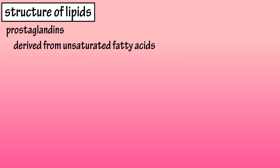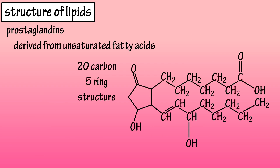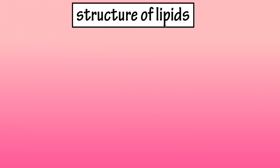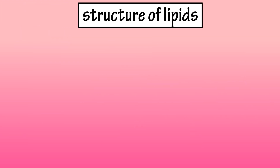Prostaglandins are lipids that are derived from unsaturated fatty acids. They are composed of a 20-carbon, 5-carbon ring structure. There are many different types of prostaglandins in the body that take part in different important functions, such as enhancing the immune system and inflammatory response. And that covers the basics on the structure of lipids.